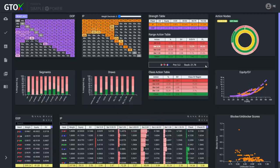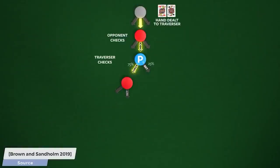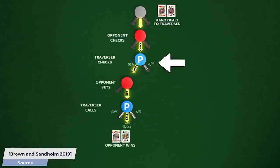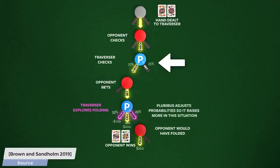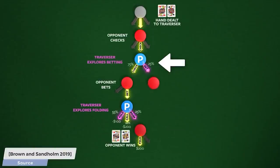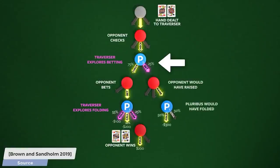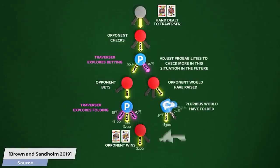Let's talk about the overall philosophy behind the structure and layout of this dashboard. As was mentioned in the first part of this video series, solvers calculate the strategies that maximize the average number of chips each player is expected to win over the long run, assuming that each player is doing his best to adjust against his opponent and win the most number of chips possible.